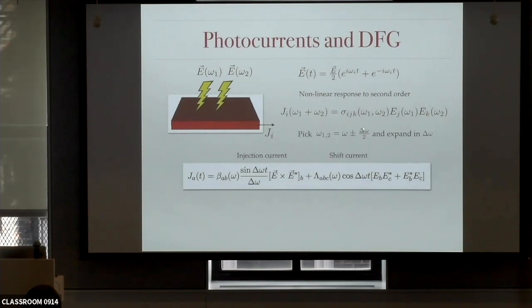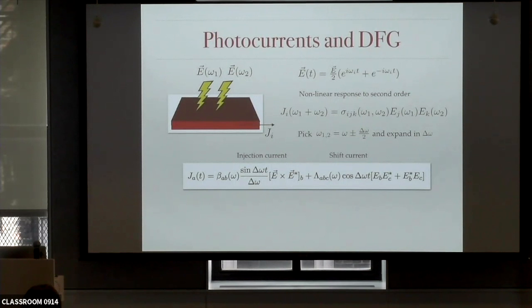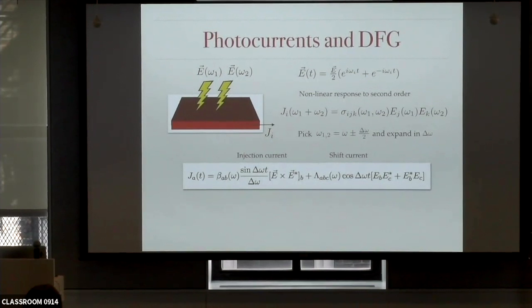I'm interested in frequency difference when the detuning is very small. I take omega_1 and omega_2 as omega plus and minus some very small detuning. Now I expand this function in the detuning parameter, and the resulting expression looks like this. You can see that there are two contributions to the current. One is a response to circular light only — it has circular origin and is proportional to sine of delta-omega times t. The one that goes with linear polarization goes with cosine omega t.